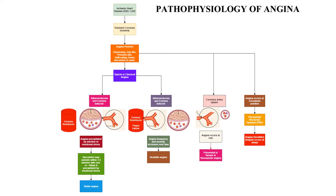In case of ischemic heart disease or coronary artery disease, a transient coronary ischemia may occur, and that may reflect in the patient as angina pectoris — a squeezing, gripping, heavy discomfort rather than pain. There are different types: classical or typical angina, which is purely related to atherosclerosis and exercise-induced, and angina which occurs at rest — that is Prinzmetal or variant angina.